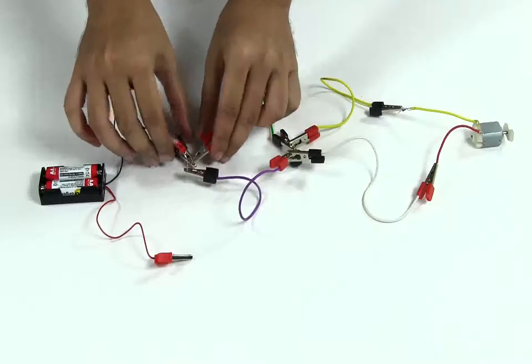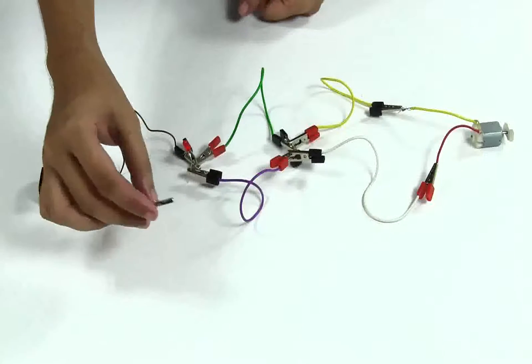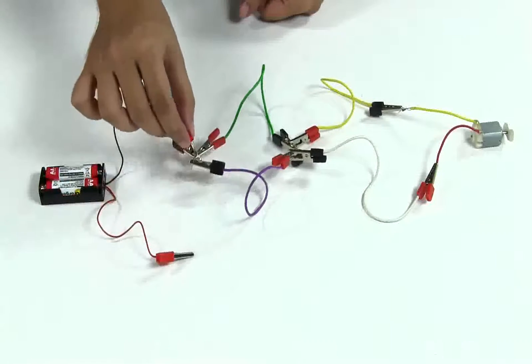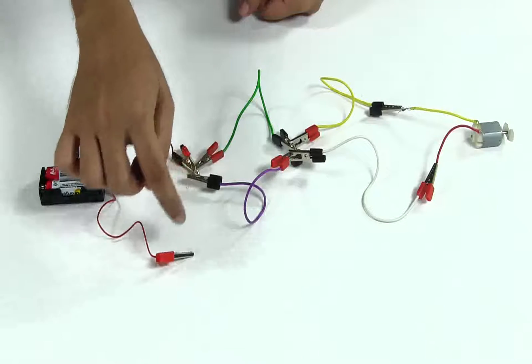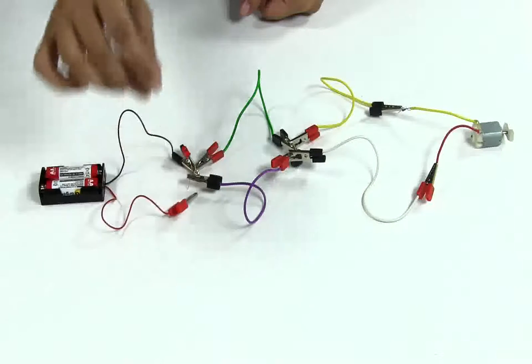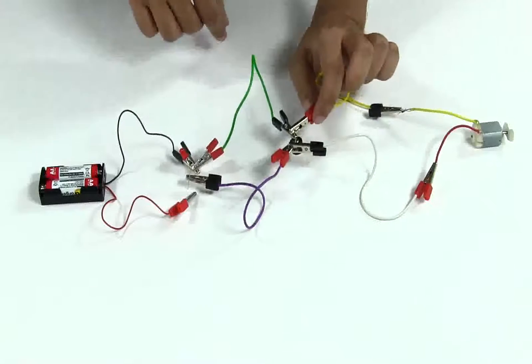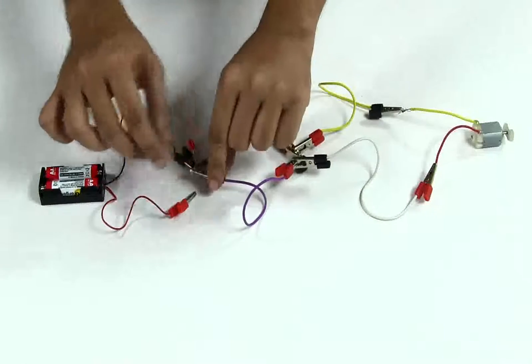This is the negative end of the battery, and this is the positive end of the battery. The bigger leg of the LED should be on the positive side of the battery. The same thing goes for the buzzer. Now I am connecting the battery.